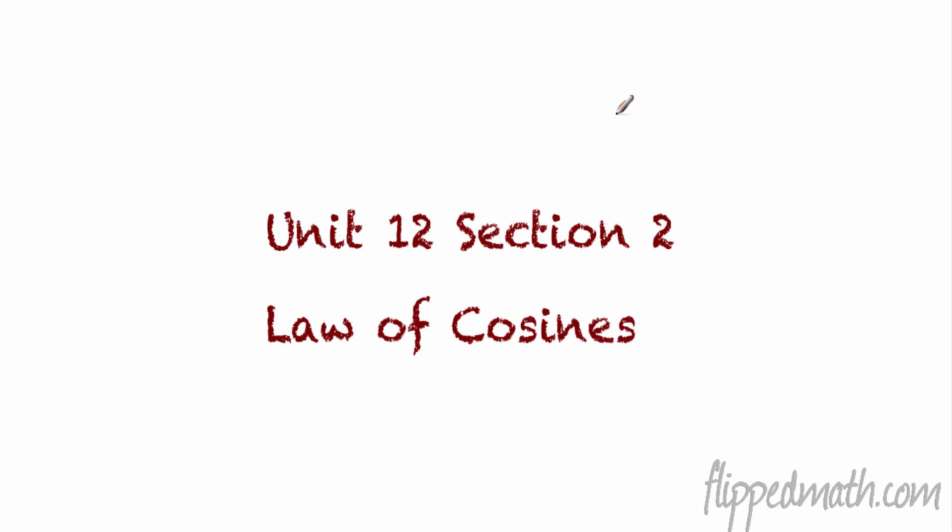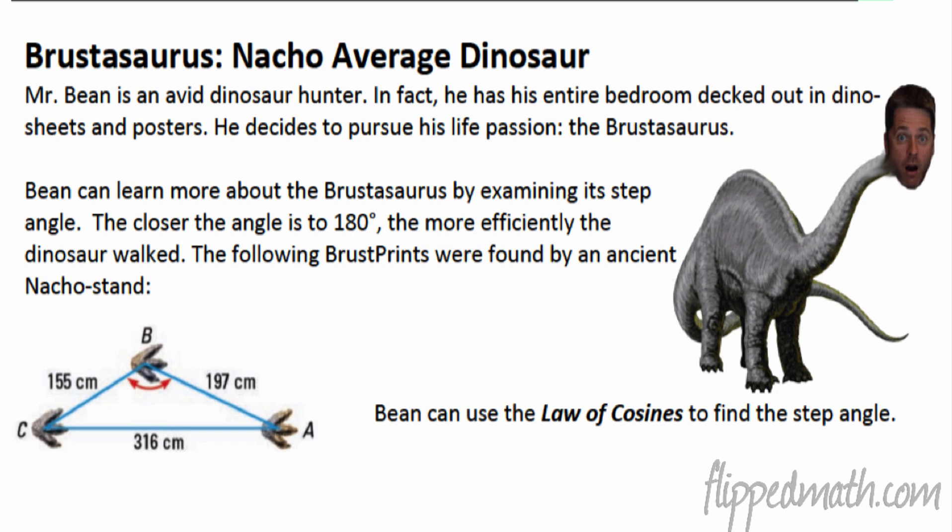Hey, we're talking Unit 12, Section 2. This is Mr. Kelly from Baumholder talking about the Law of Cosines. Let's set it up for us. We've got the Brustosaurus, that is Nacho Average Dinosaur.